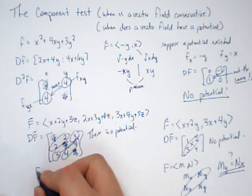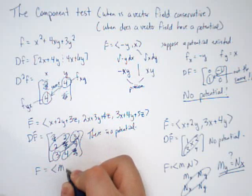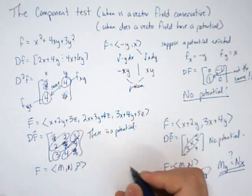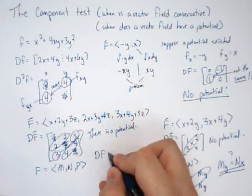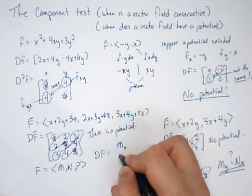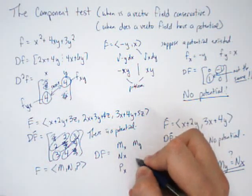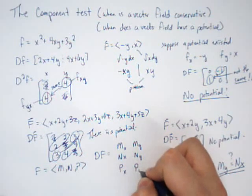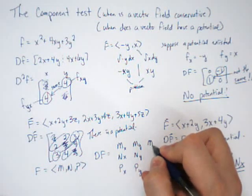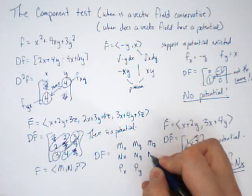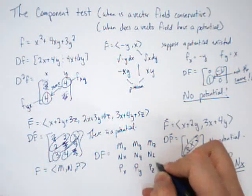Over here, when we're in three dimensions, our function is m, n, and you'll see a p. So if I calculate the derivative, we'd get an mx, nx, px, my, ny, py, mz, nz, pz.